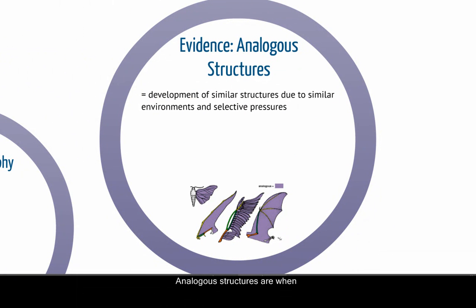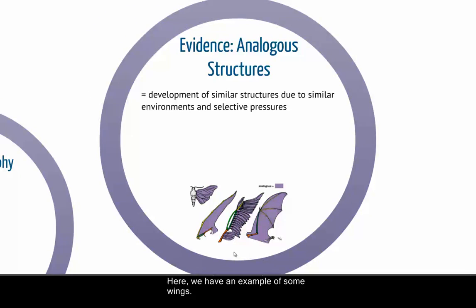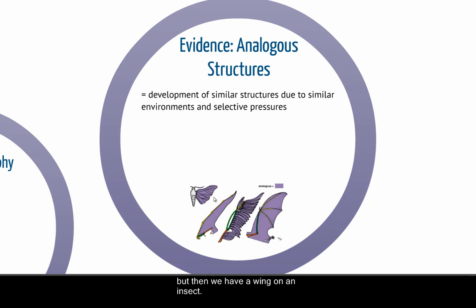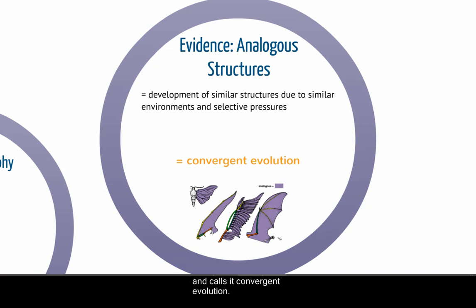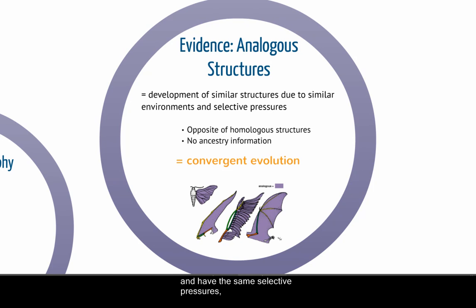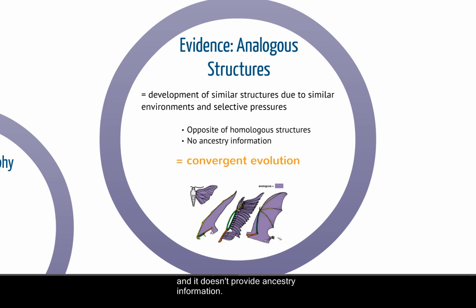Analogous structures are when very different species develop similar structures because they live in similar environments and face similar selective pressures. For example, a bat wing and an insect wing serve the same function but are structurally completely different. The theory of evolution by natural selection predicts this and calls it convergent evolution — if organisms live in similar environments with the same selective pressures, they may arrive at similar physical or behavioral solutions. This is the opposite of homologous structures and does not provide ancestry information.